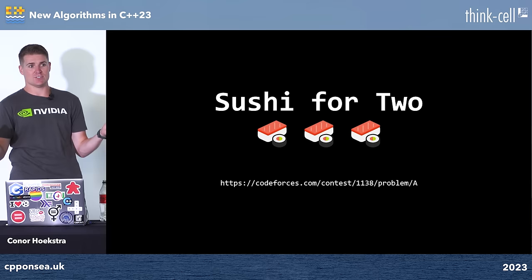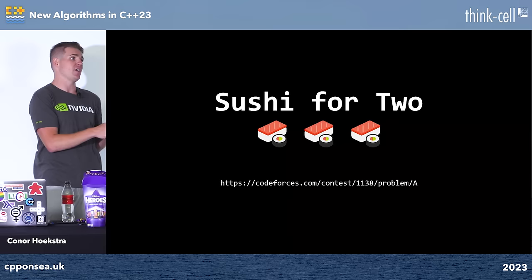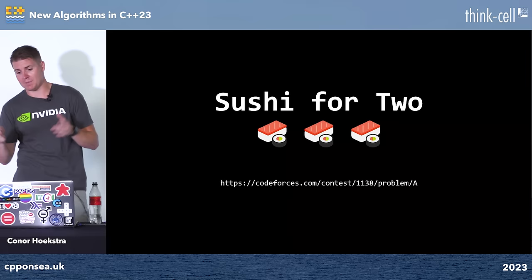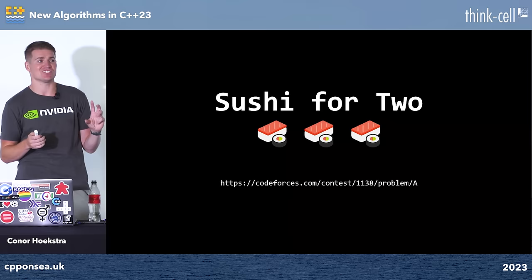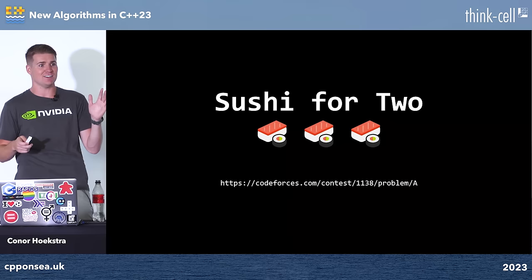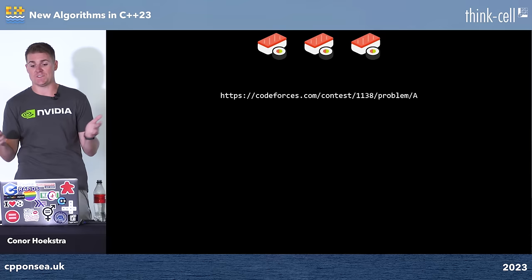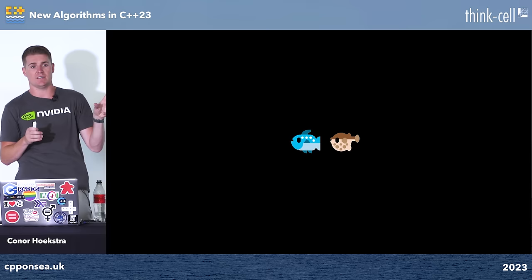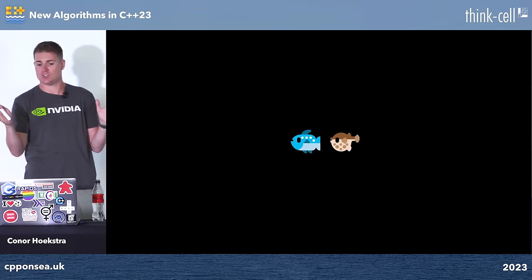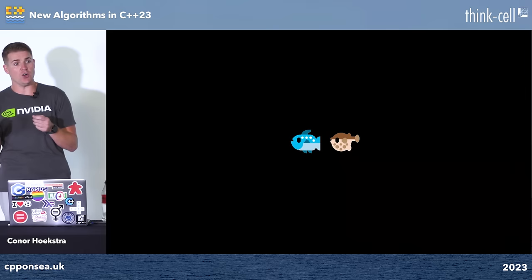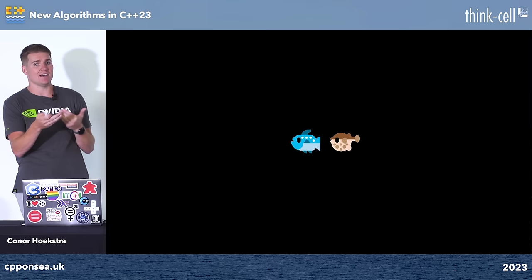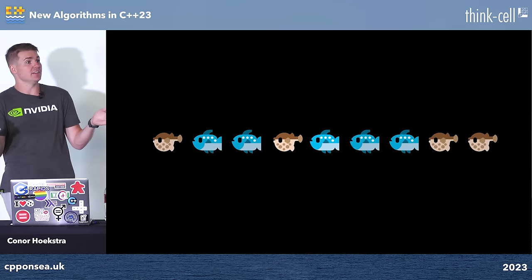Sushi for Two is one of my favorite problems. I first solved it in a competitive programming contest in 2019. You're given a list of 1s and 2s representing two types of fish — tuna and puffer fish. You and a friend are at a sushi restaurant and want to maximize the total sushi you eat collectively, subject to a set of rules. You must choose a contiguous set of fish, you and your friend must eat the same number, you each only eat your preferred type, and the selection must be partitioned by fish type.